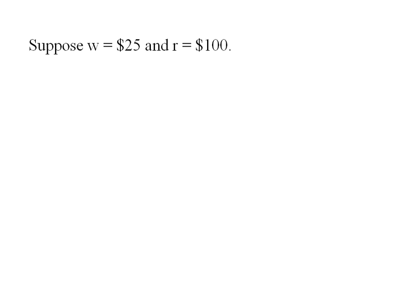So it's W times Q squared over 2500 K bar, and this is my short run total cost expression. Let's suppose we know the wage is $25 and the rental rate of capital is $100.